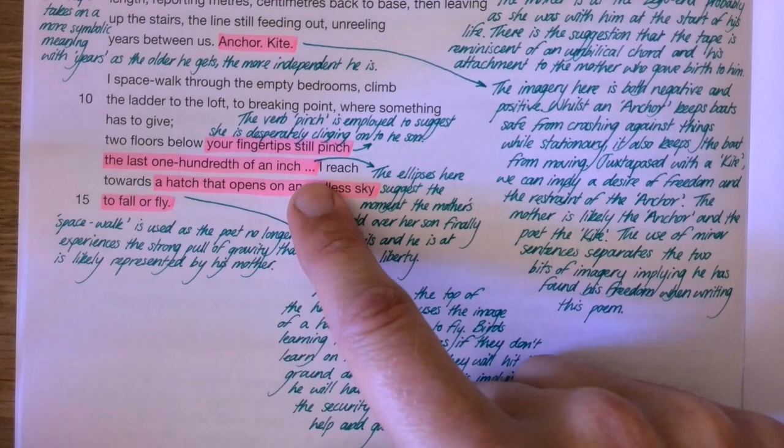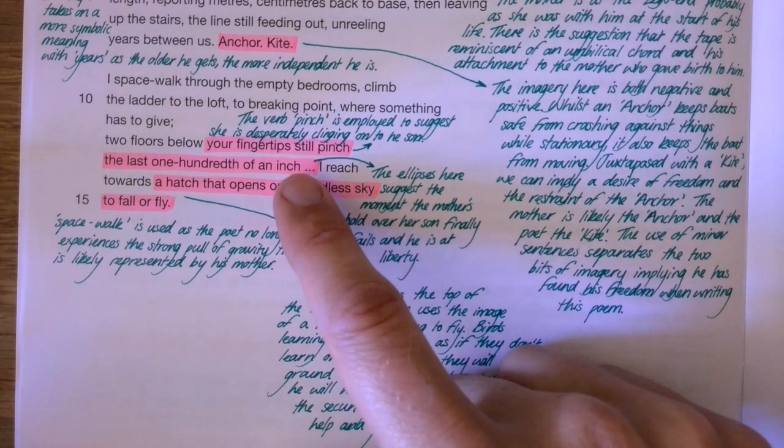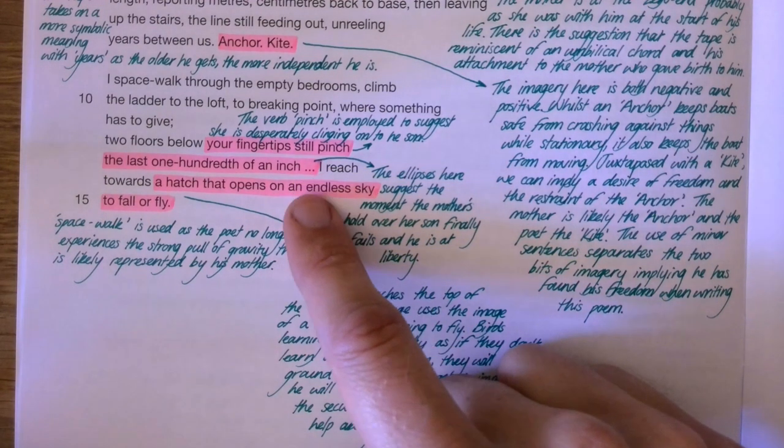You then have these ellipses, the dot dot dot, and that suggestion there is that this is where she actually loses her grip, the dot dot dot there. These ellipses.